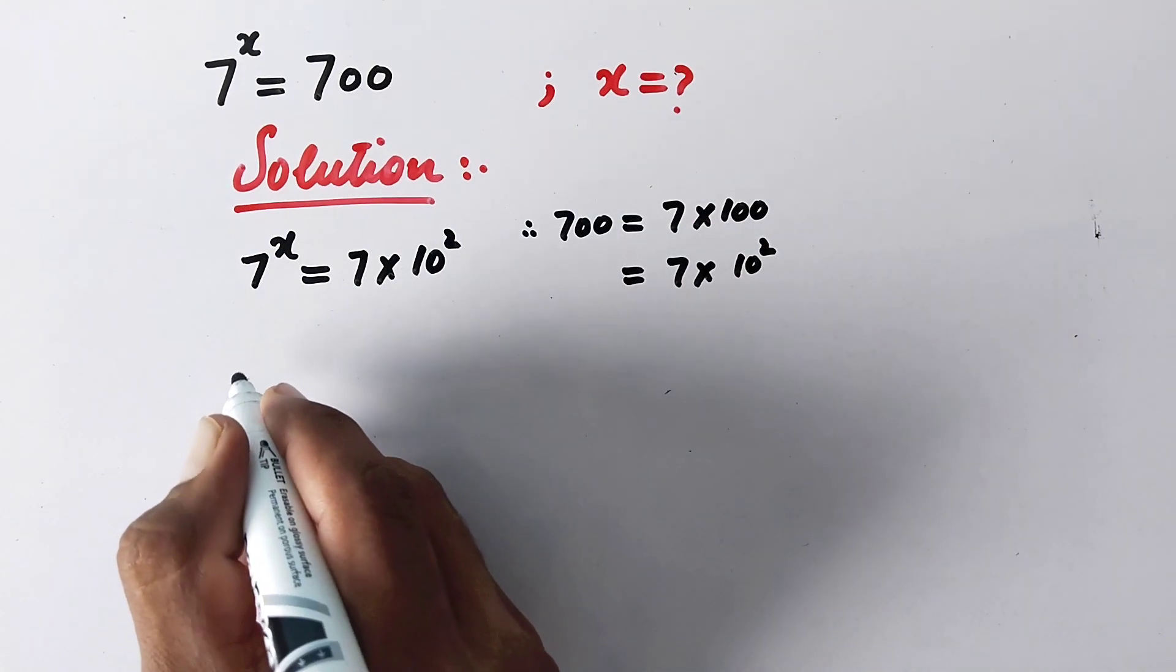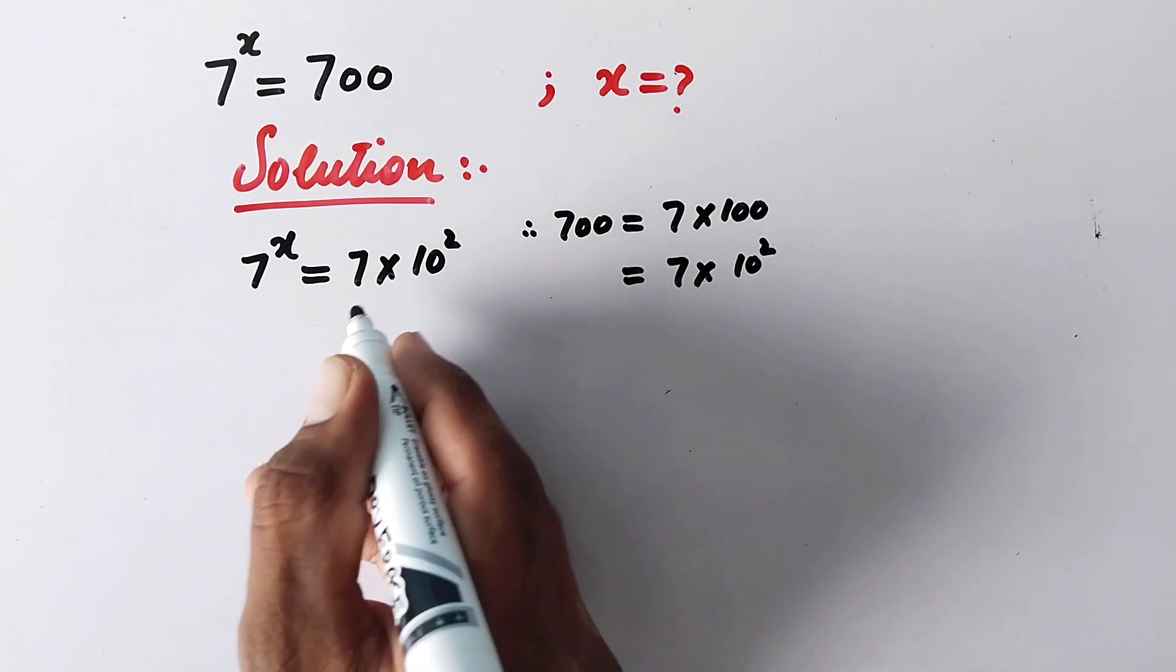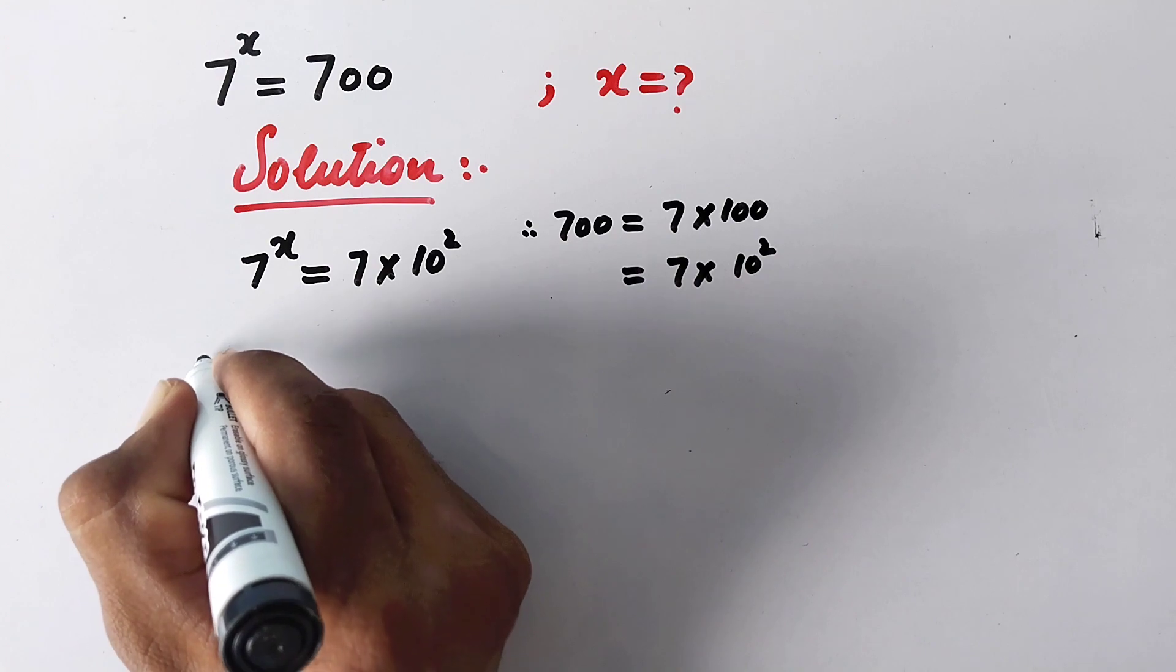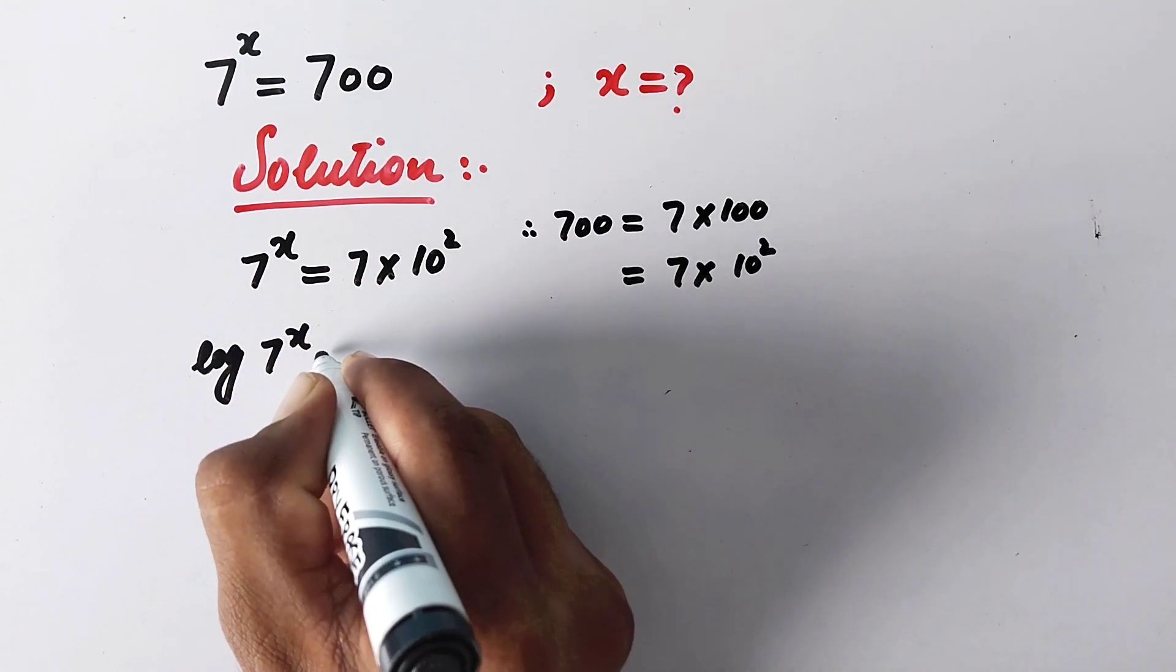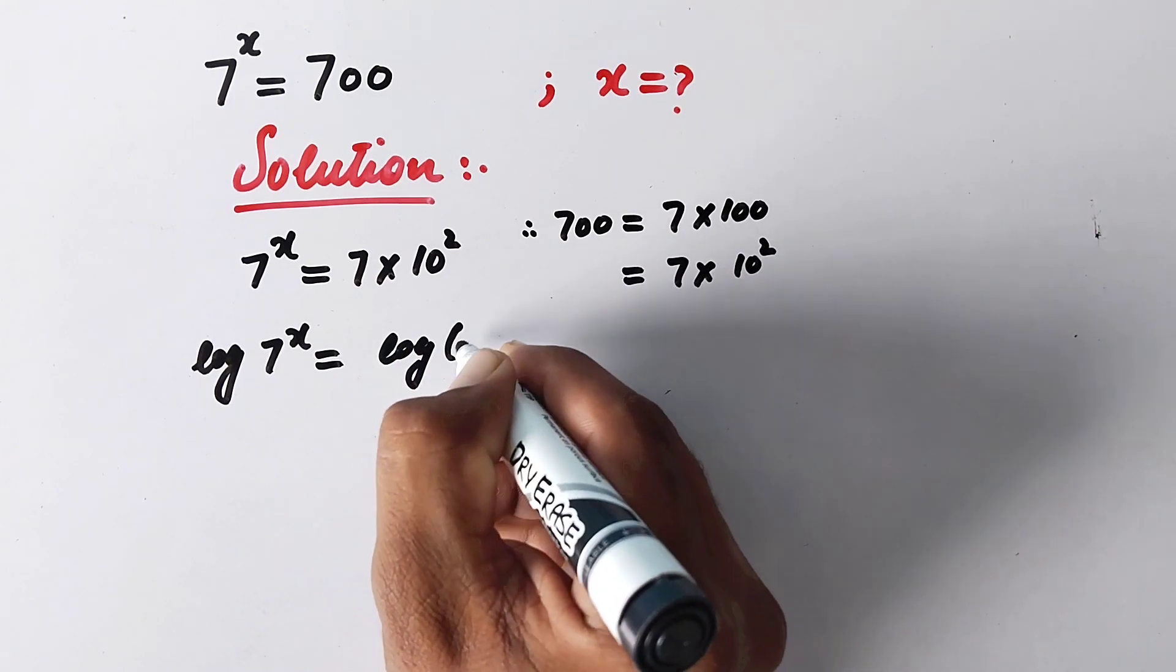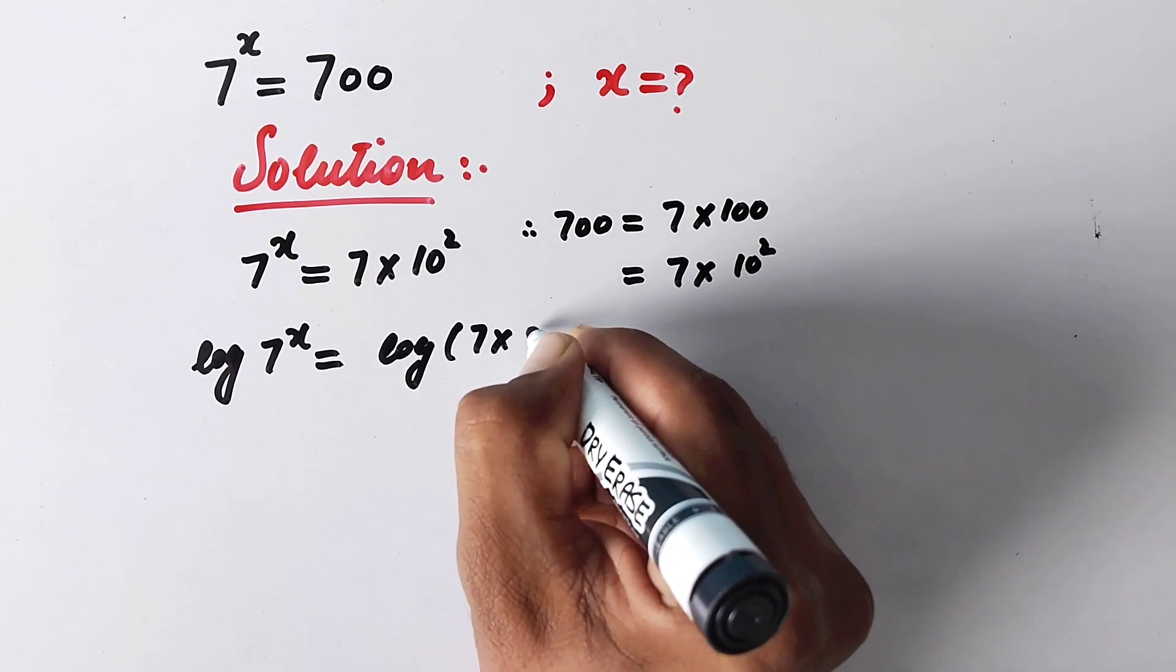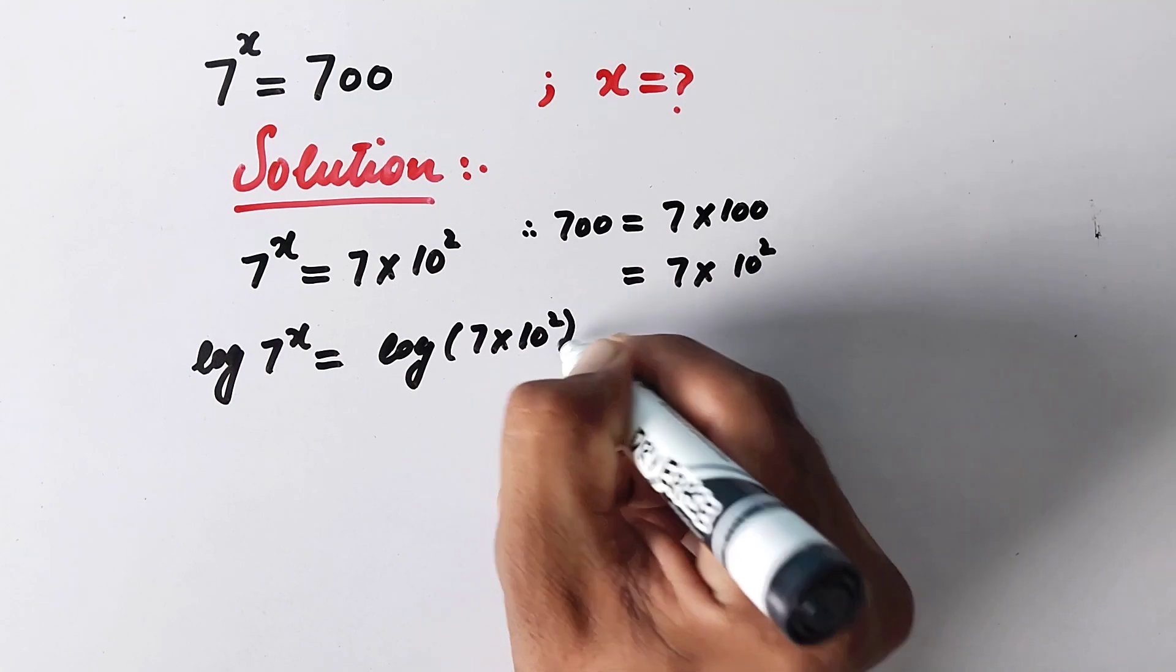And now in next step, we will take common log on both sides of equation. So it will be log 7^x is equal to log 7 multiplied by 10 squared.